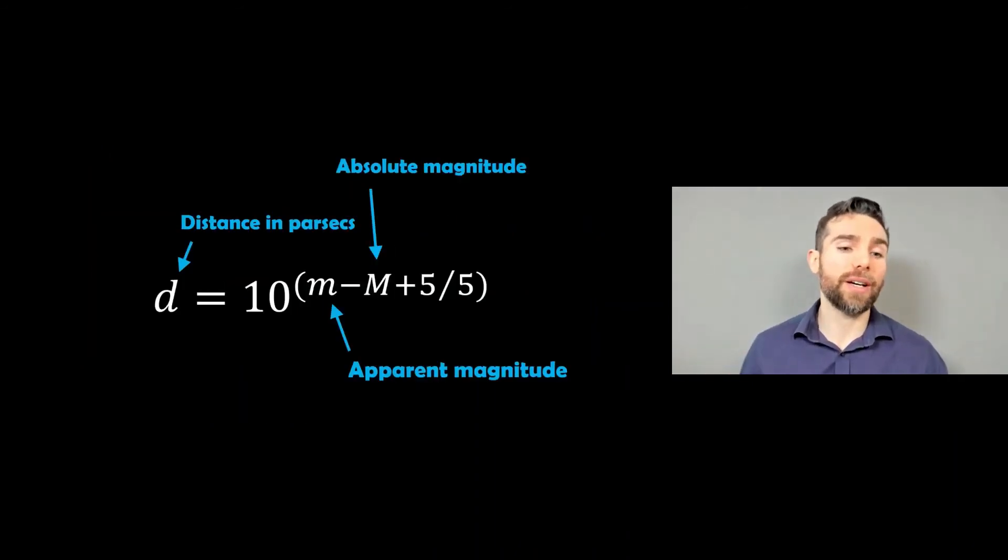So if you use this equation here, you can get the distance to a star in parsecs. You need to measure the apparent magnitude, which is your small m. The absolute magnitude is what we've just pulled off that plot because of that relationship between the period and the absolute magnitude. We can get that and then we can get a distance to it.